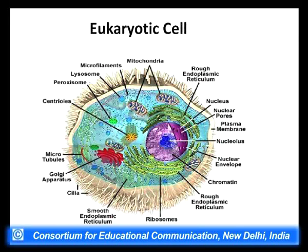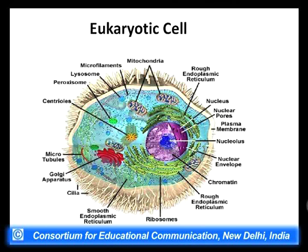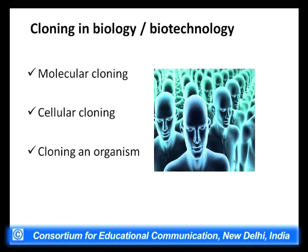In a eukaryotic cell, we have a defined nuclear membrane and extra-chromosomal organelles like mitochondria, Golgi complex, and many others that prokaryotic cells lack. The nucleus contains genetic material in the form of chromosomes, which are made up of genes, and genes are made up of DNA. So if we understand a eukaryotic cell, there is DNA at the molecular level, cells forming tissues, organs forming an organism — three categories.